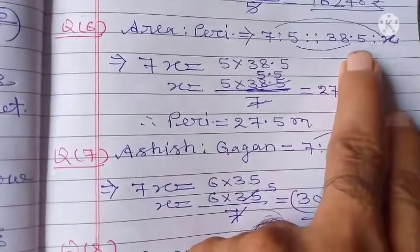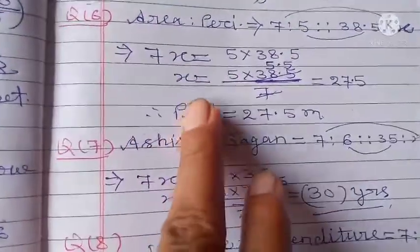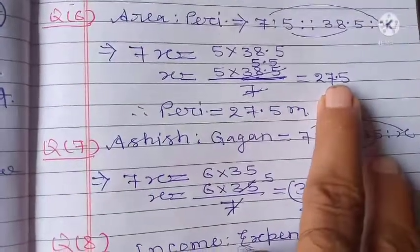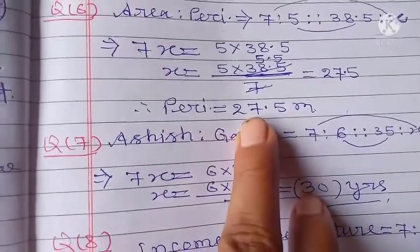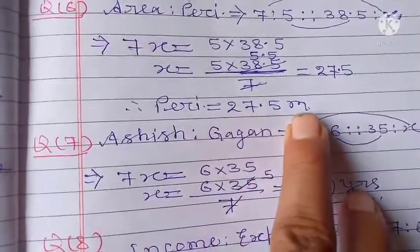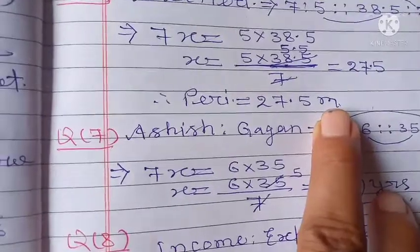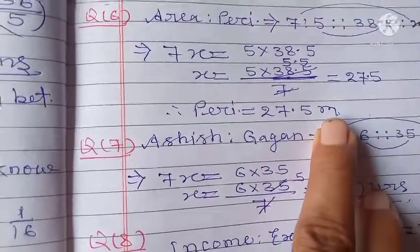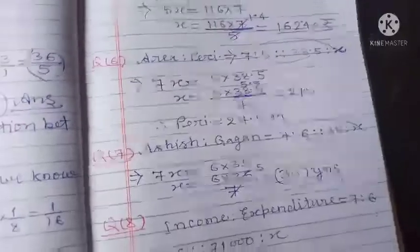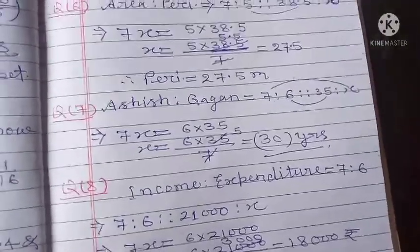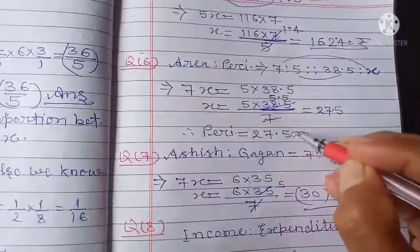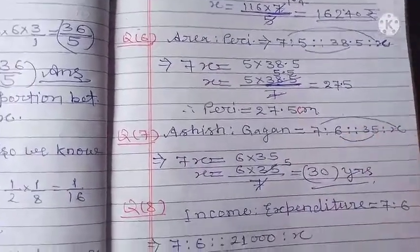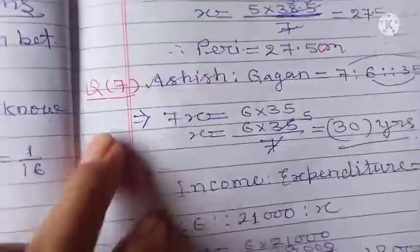The ratio is 5. So we calculate 5 into 38.5. Let us see, this will be 70 meters for the perimeter.